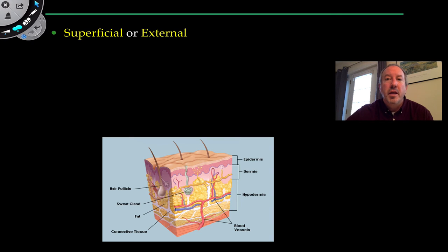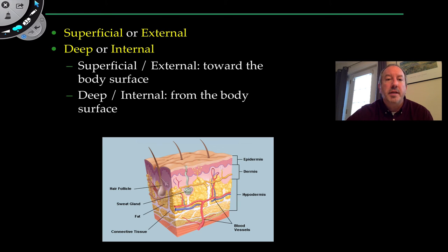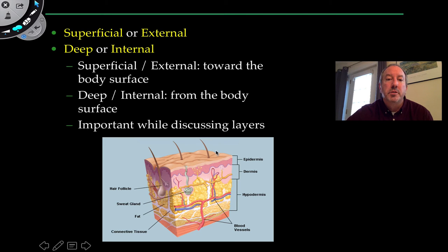In anatomy we also talk about superficial versus deep. Superficial means external, toward the body surface, while deep means internal, away from the body surface. This is usually referred to when things are in layers — for example, the epidermis is more superficial than the hypodermis or subcutaneous layer. The adipose tissue underneath would be deeper, and this relates to whether you have a superficial wound or an internal one.